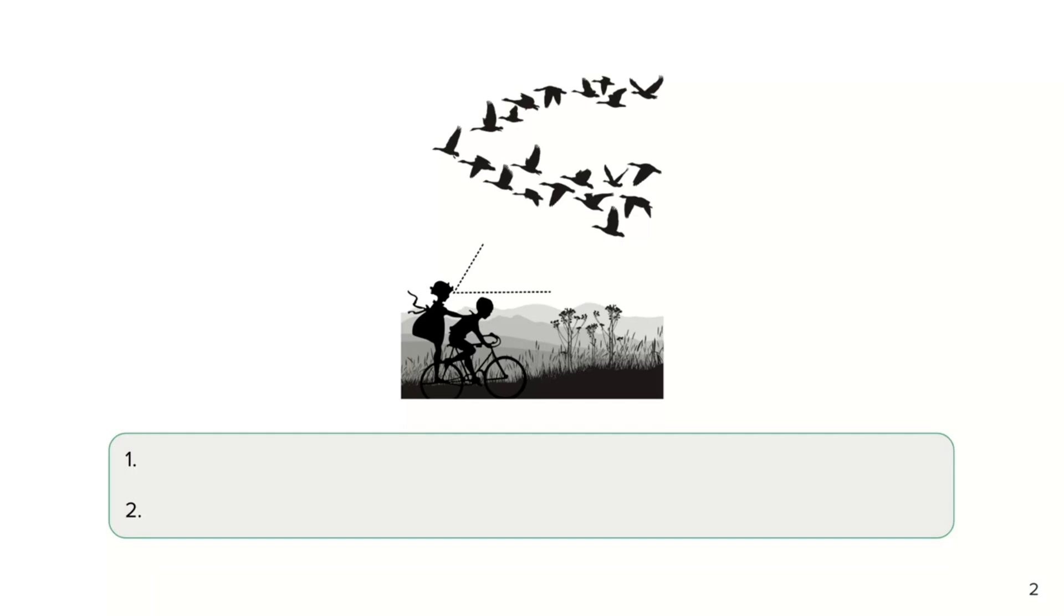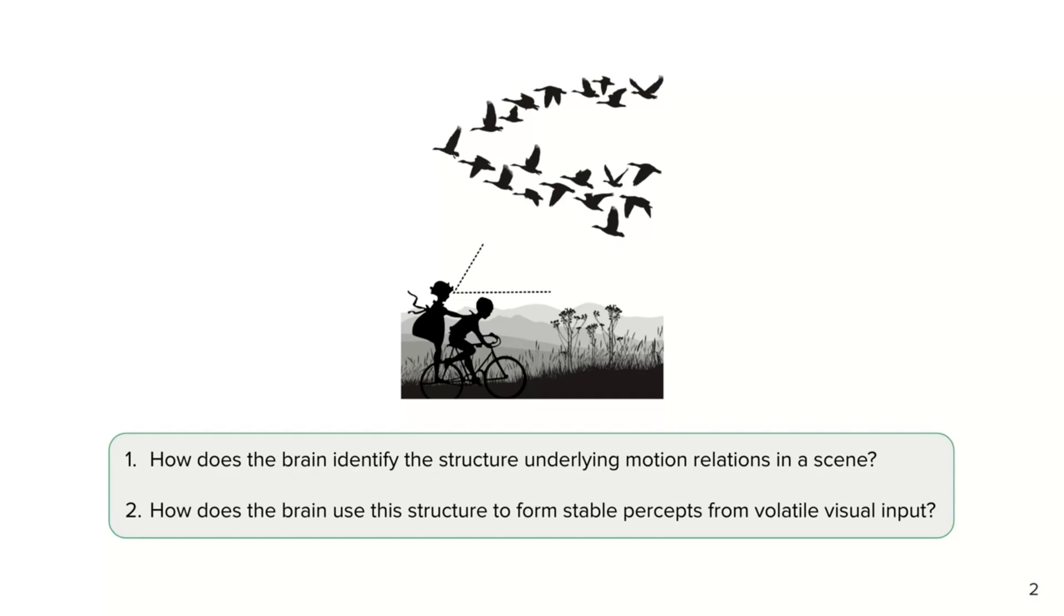This raises two questions. How does the brain discover online the structure underlying motion relations in a scene? And how does the brain use this identified structure to form stable percepts from volatile, noisy, and sometimes ambiguous visual input?